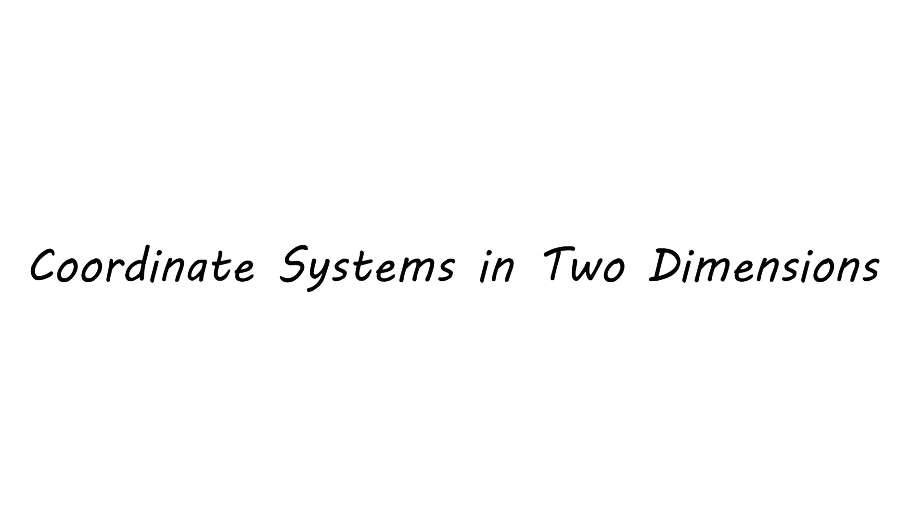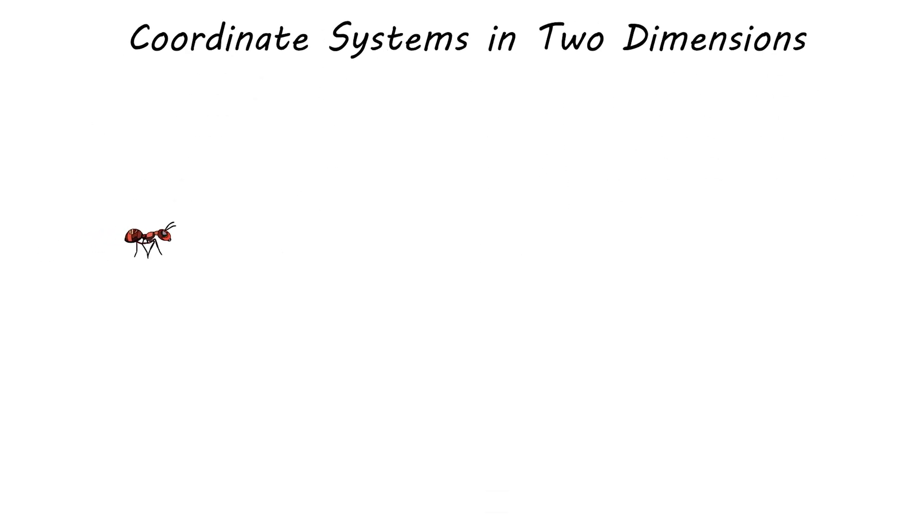Coordinate systems in two dimensions. In one-dimension motion, we used to describe the object motion along one line, the x-axis. So the object was allowed to move forward to the right and explained with positive direction, or backward to the left and given a negative direction.